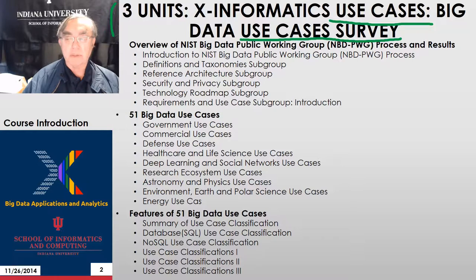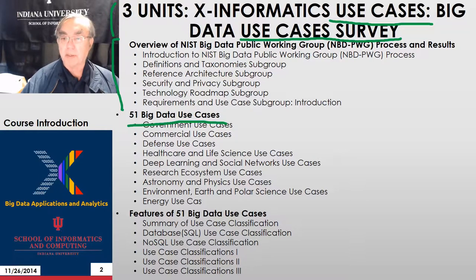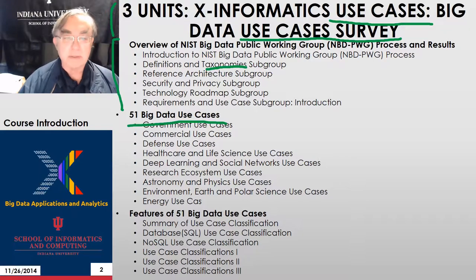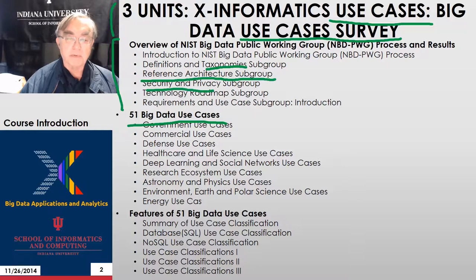We have a use case survey done by NIST. I and many others helped NIST do this, and we collected 51 use cases through a process called the Big Data Public Working Group — a pretty interesting effort done by volunteers in an open fashion. NIST only does open things of general value to industry and academia. Most participants were from industry with a sizable number from academia. Working groups covered definition and taxonomies, a reference architecture describing computing subsystems, a security and privacy group, and a technology roadmap group — which was difficult because it dealt with the future while the current situation was still being defined.